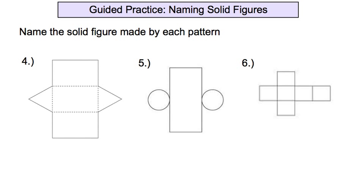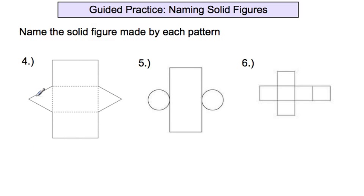The other thing we have to do today is to be able to name the solid figure that is made by a pattern — also called a net. What shape, if you folded it all up and connected all these parts, would it make? This one takes a lot of practice. But on this one you see you have two triangles on the ends here and then a bunch of parallel lines. And if we have two triangles on the end and a bunch of parallel lines, it forms a prism. And then what is the base shape that forms the prism? It's a triangle. So this is a triangular prism.